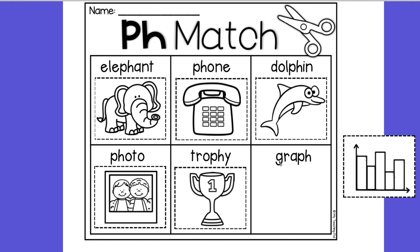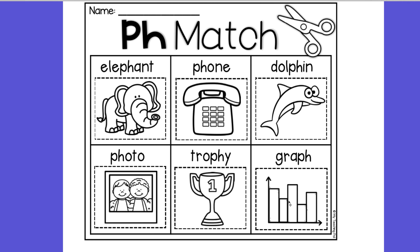And my last one, boys and girls, let's stretch it out: graph. So I have matched all six pictures with the words, and this was Phoebe, the H sister, P-H. She says 'f.' That is all for our digraphs. I want you to practice writing some of your digraphs at home and finding things in your house that have the digraph in them. All right, boys and girls, see you next time.